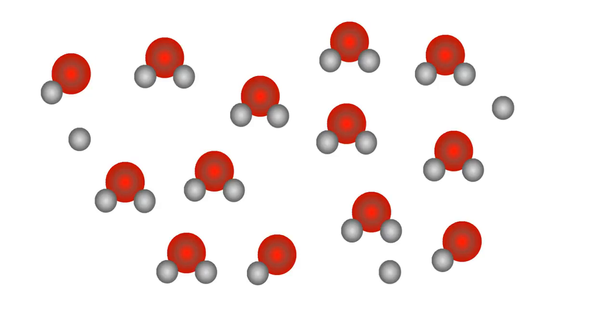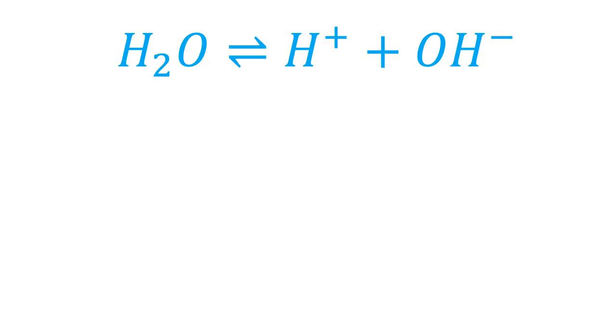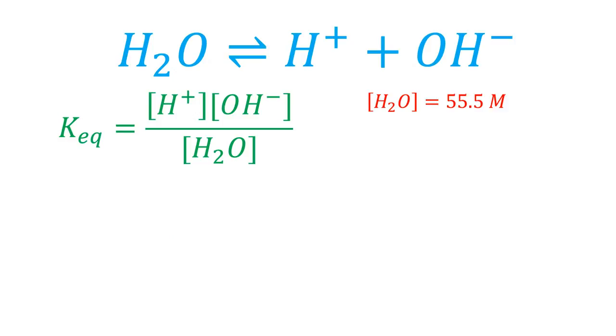When there is an equilibrated system with reversible reactions like the ionization of water, we can determine an equilibrium constant, which in this case is equal to the product of the ion concentrations divided by the concentration of water. The concentration of pure water is 55.5 molar, namely 55.5 moles of water per liter.